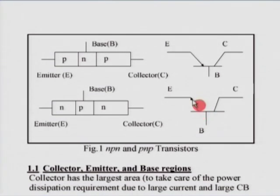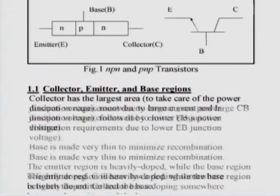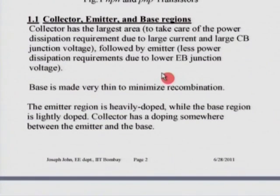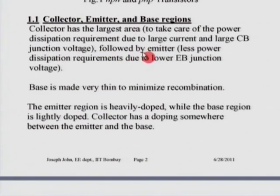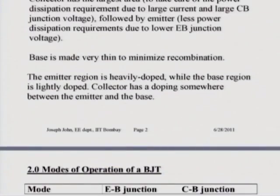In a NPN transistor, the emitter current flows out of the device, whereas both base current and collector current flow into the device. Looking in more detail at the collector, emitter and base regions: the collector has the largest area in a BJT, to take care of the power dissipation requirement. The emitter has slightly less area, and the base is made very thin to minimize recombination. In terms of doping, the emitter region is heavily doped, while the base region is lightly doped. The collector has doping somewhere in between.